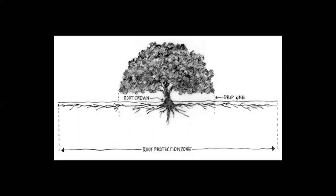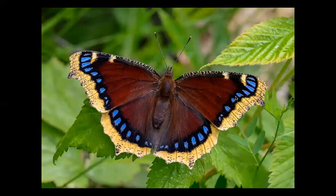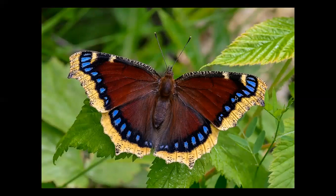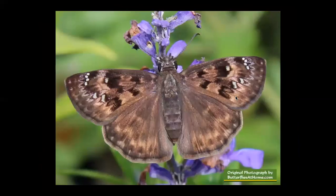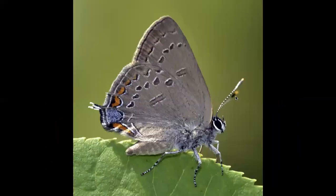Oak Motts are home to a wide variety of wildlife. Common species of invertebrates in Oak Motts include fire ants and butterflies. In fact, oaks might arguably be the most valuable host tree for butterflies because they support so many different species. Butterflies that consider oak trees a host plant include the Morning Cloak, Horace's Dusky Wing, and five different species of hairstreak butterflies.